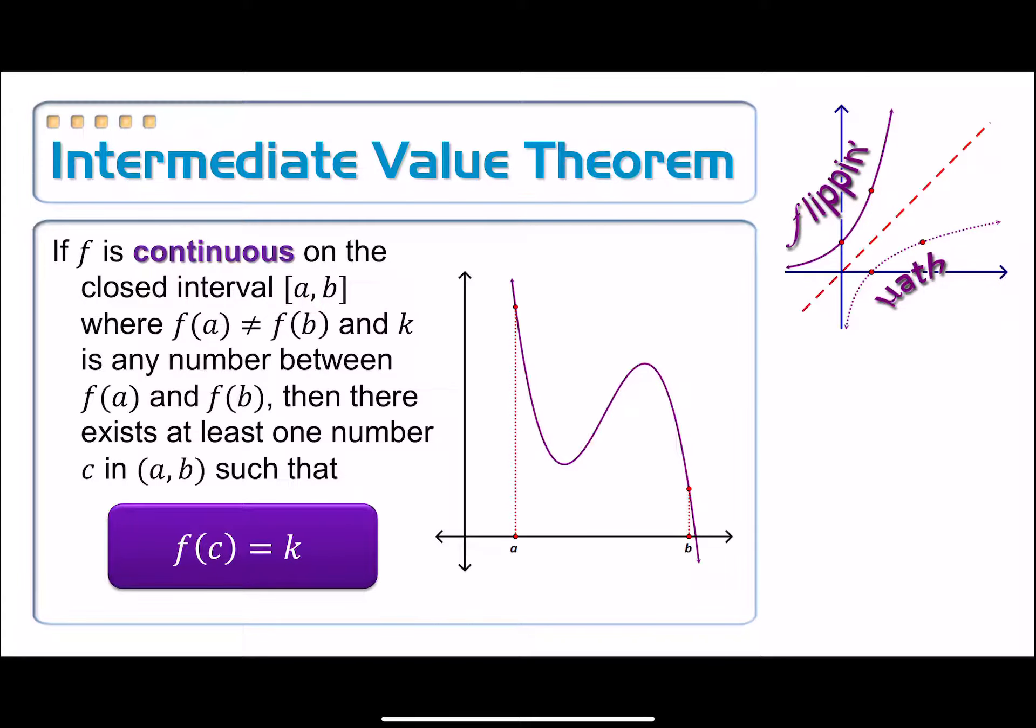The second part is that our y values at the endpoints cannot be the same. So I can see also very clearly that f of a up here, not the same thing as f of b. I need that to be true because I'm finding a y value, that's this k here, that's between those two. I cannot find a number that's in between these two if they're the same number. So I'm going to randomly choose in between these two some y value, which I will call k, like this.